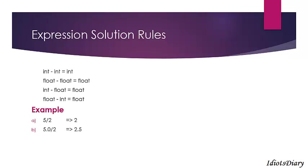In the next example, 5.0 divided by 2 — the output would be 2.5, because 5.0 is a float type value. In the next example, 5.0 divided by 2.0 — the output would also be 2.5, because both values are of float data type.